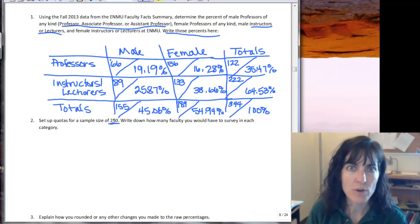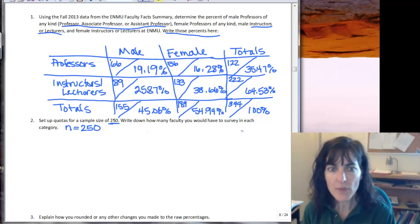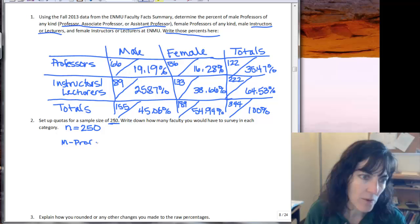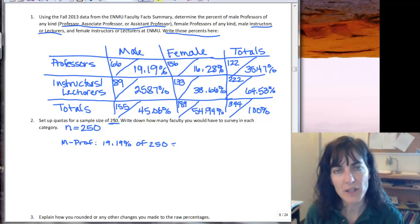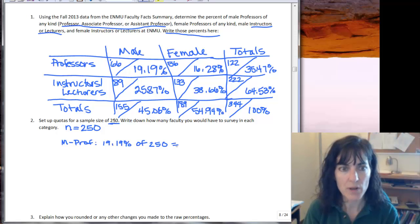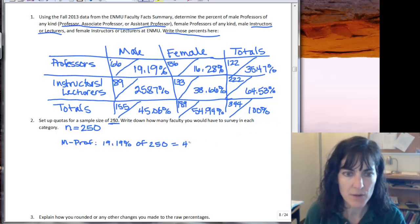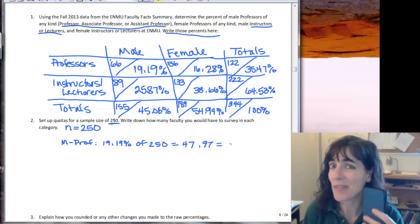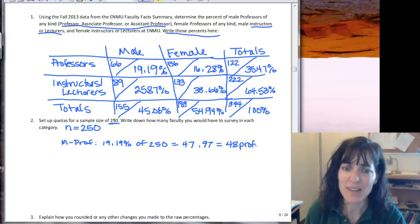So we have 344 faculty members and we want to do a sample size of 250. And so what I want to know is how many faculty I need to survey for each of these categories. So to do that for male professors, I need 19.19% of the 250 to be talked to as male professors. So what that comes to, remember you have to convert it back to a decimal, so we'll have 0.1919 times 250 and I get 47.97 male professors. I can't talk to 0.97 because I can't chop off an ear or an arm to make it 0.97, so I'll have to talk to 48 professors.